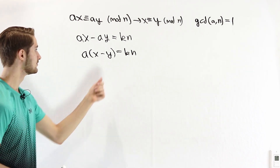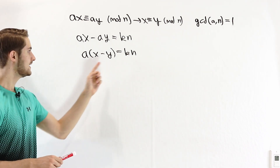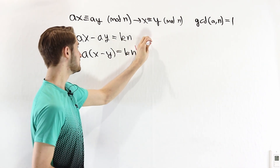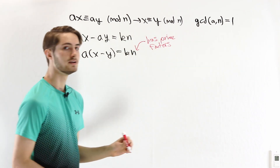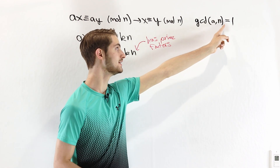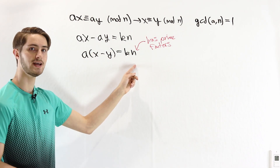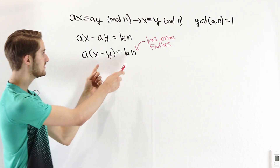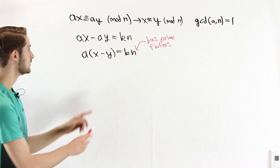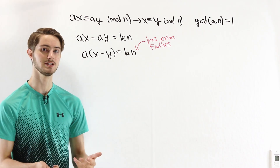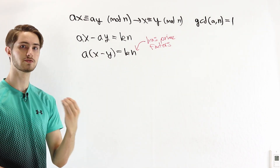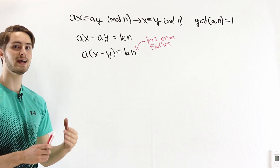Now let's think about what is necessary for this equation to be true. Since a and n are relatively prime, they don't share any prime factors. We know n has some prime factors, and a will not have any of those prime factors because gcd(a, n) = 1. So for this equation to be true, x − y needs to have all of the prime factors of n.